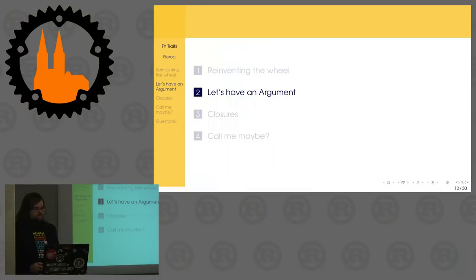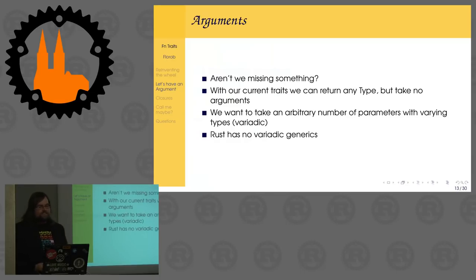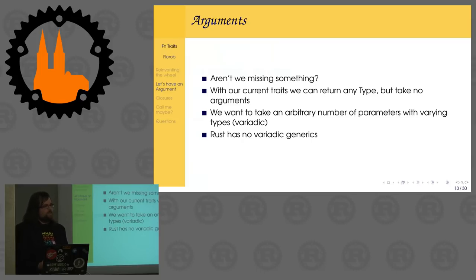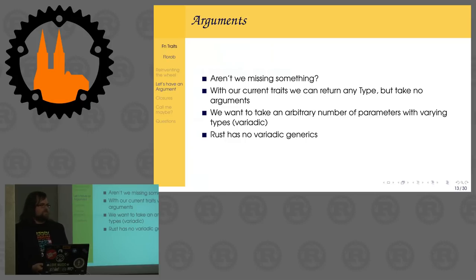Now the actual problem: none of these functions could take arguments. That's a bit boring. We can have a return type, but we cannot have any arguments. And the problem is that Rust doesn't really have methods with variadic parameter counts, or variadic generics for that matter. So we can't really define a trait that would actually have that property to give us any argument number we'd want for a function — that's not something the Rust type system can do right now.